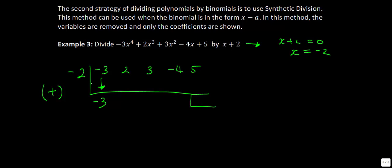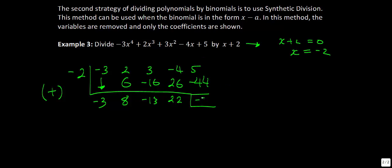We take negative 3 and multiply it by negative 2: that's 6. Then 2 plus 6 is 8. Then 8 times negative 2 is negative 16; 3 plus negative 16 is negative 13. Negative 13 times negative 2 is 26; negative 4 plus 26 gives us 22. And 22 times negative 2 is negative 44; adding that to 5 gives us a remainder of negative 39.